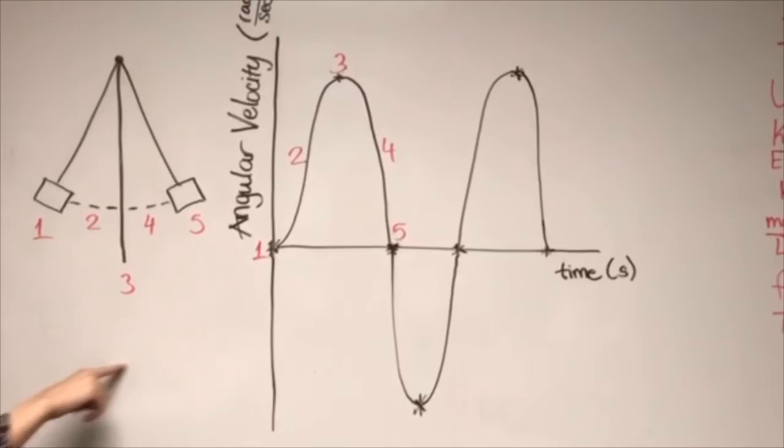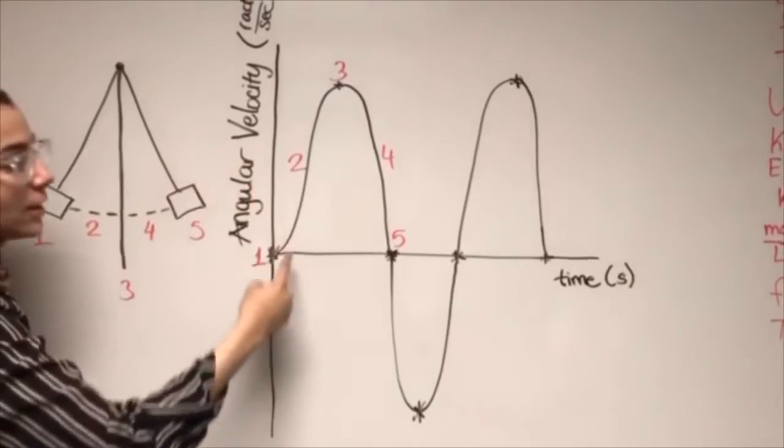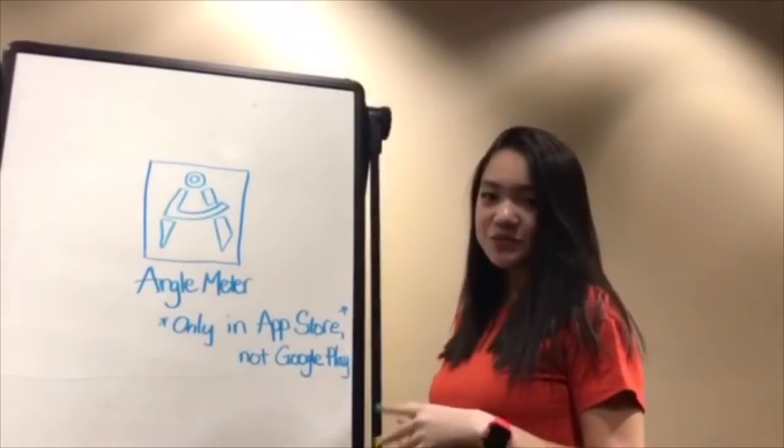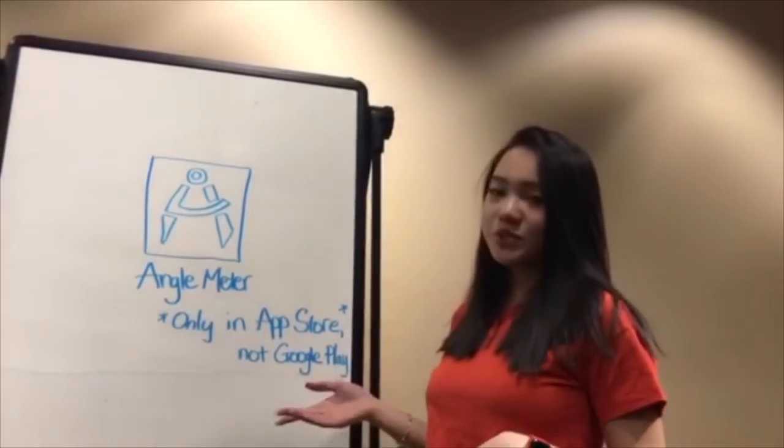As the pendulum goes back from point 5 to point 1, the angular velocity is increasing and then decreasing in the negative direction. The angle of the peaks were found by using the angle meter app, which will be shown in the next clip.